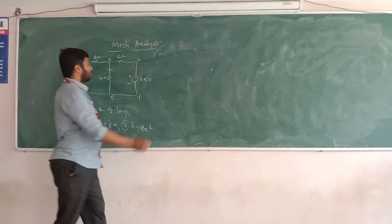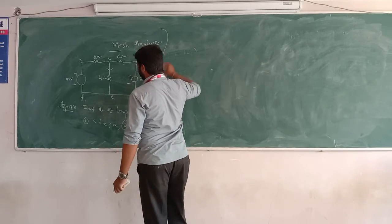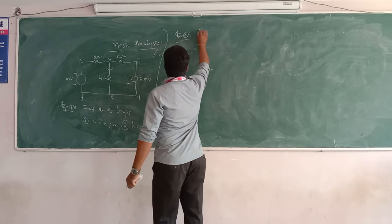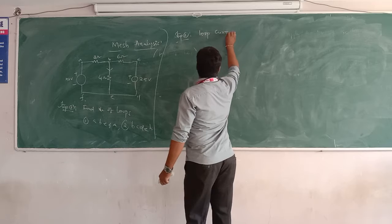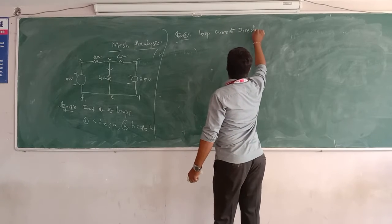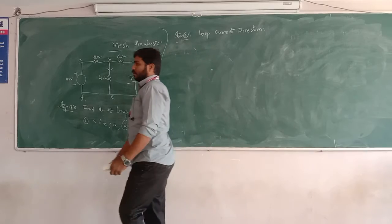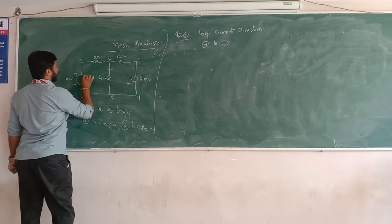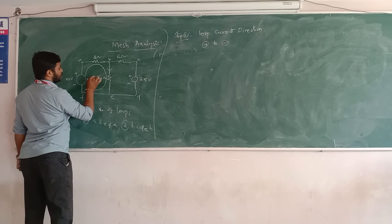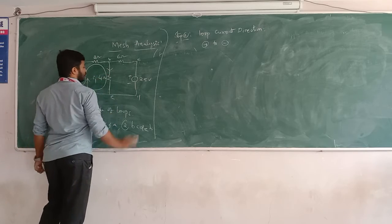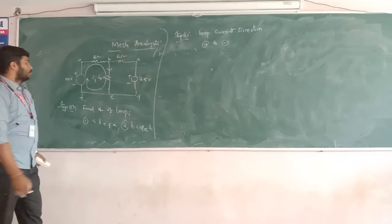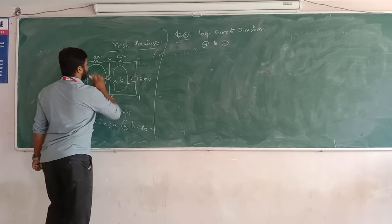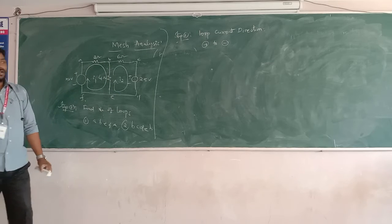There are only two loops. Next, we have to indicate the loop current direction. For the first loop, the current direction is assumed clockwise — this is loop current I1. For the second loop, the current direction is also assumed clockwise — this is loop current I2. Both loops follow the same direction, I1 and I2.